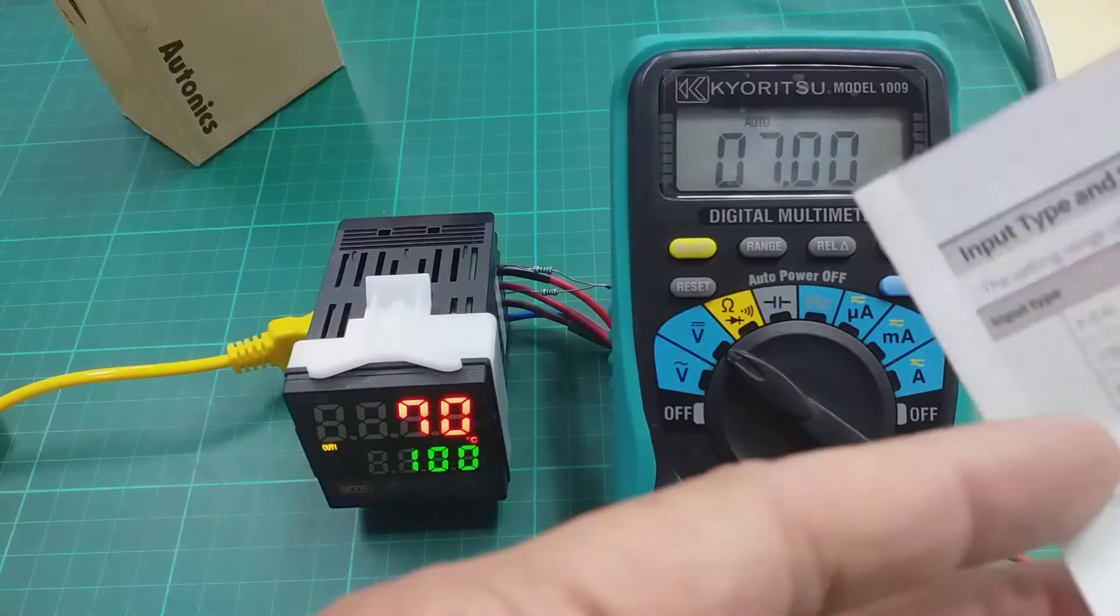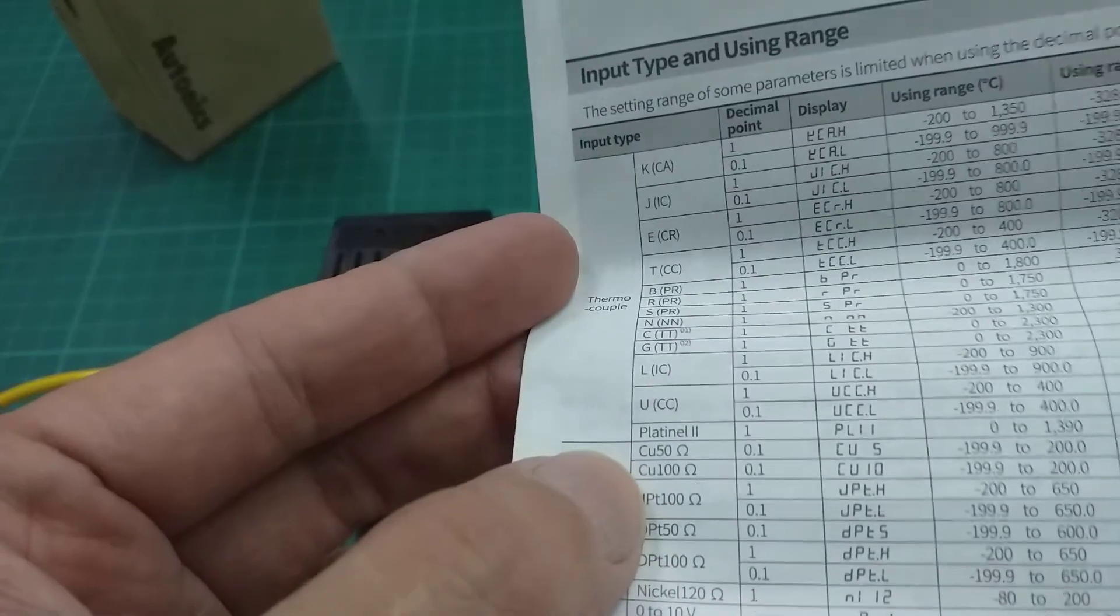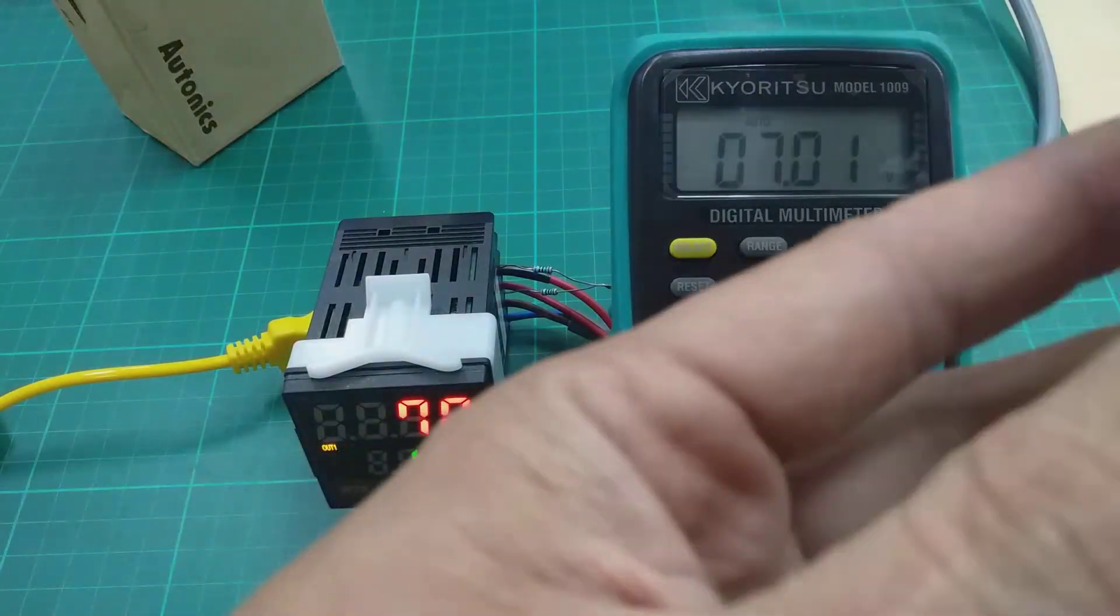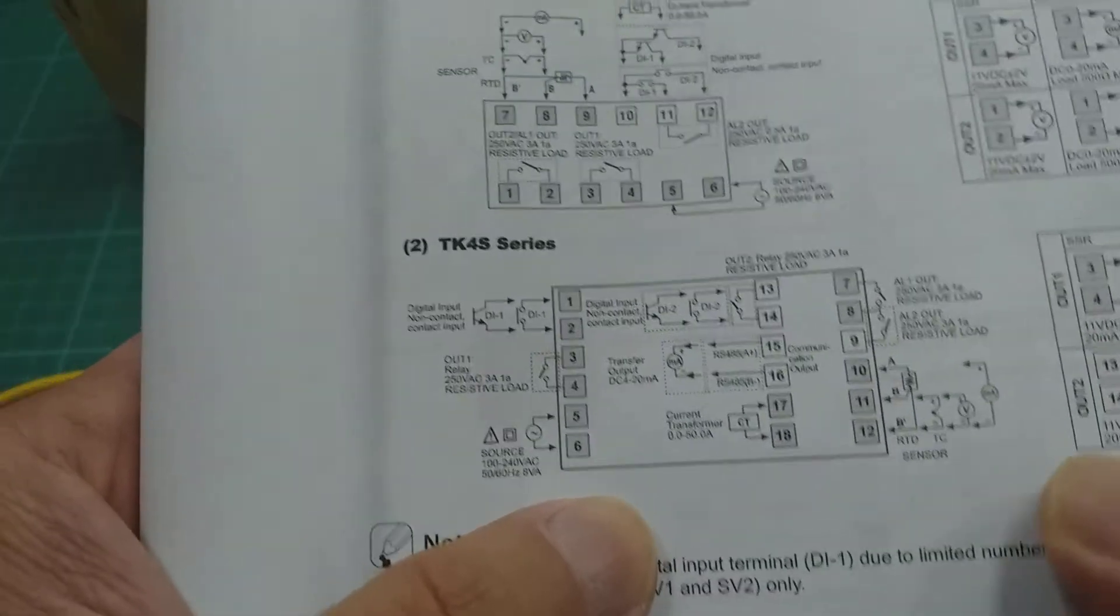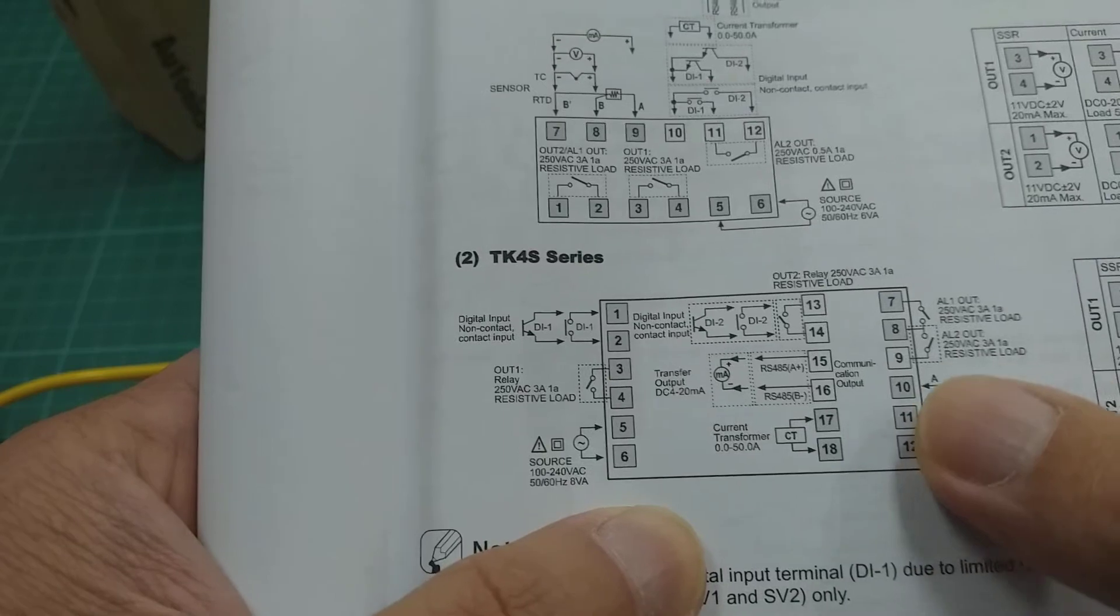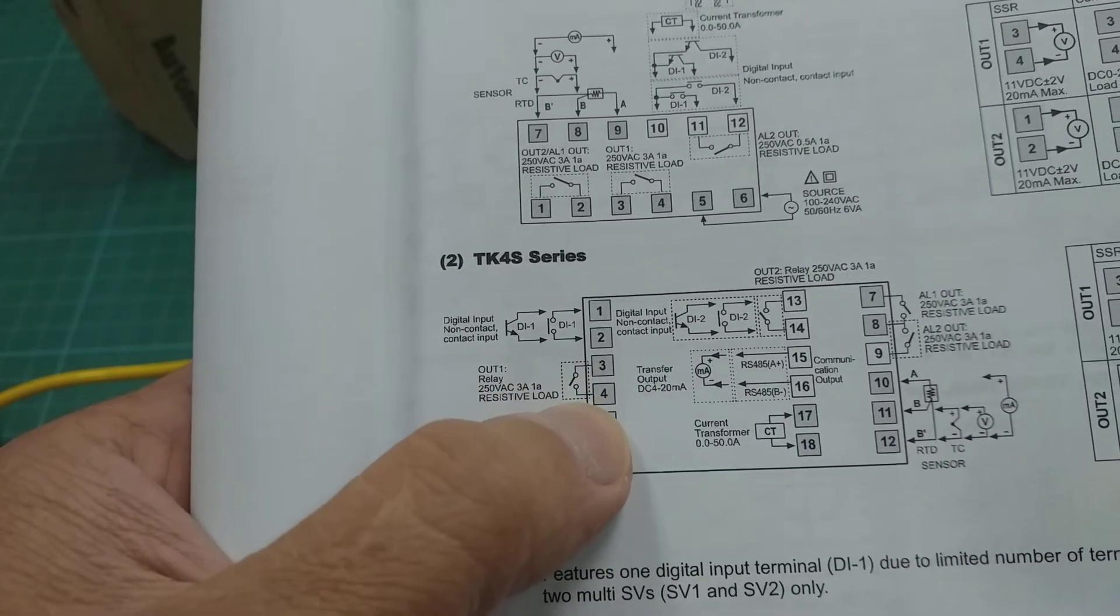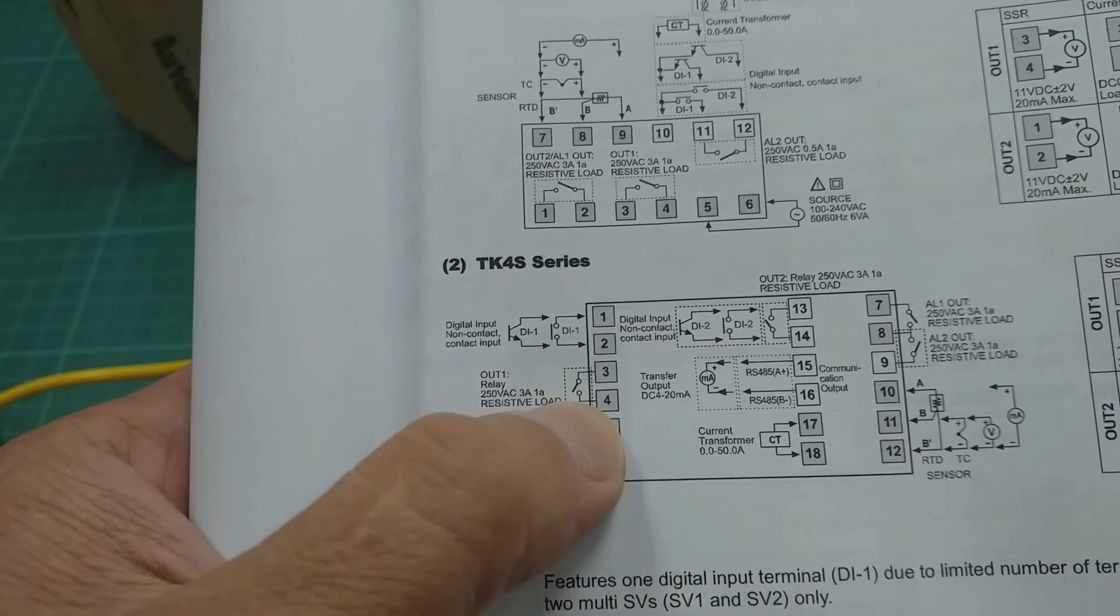So how to wire your PT100, this one PT100 RTD, pin number 10, 11, 12. This one output 3 and 4, 3 is plus, 4 is negative.